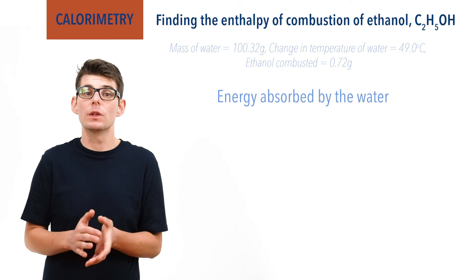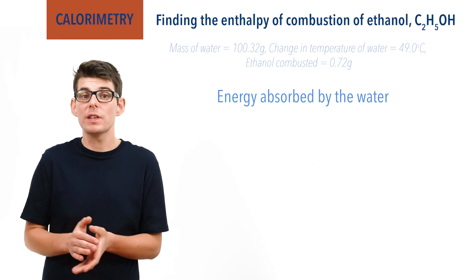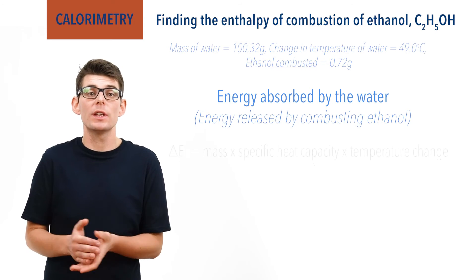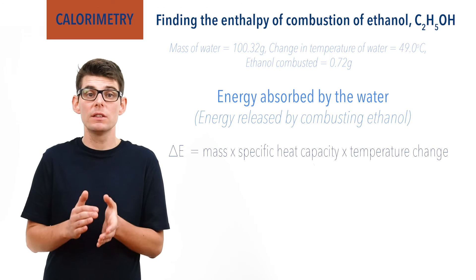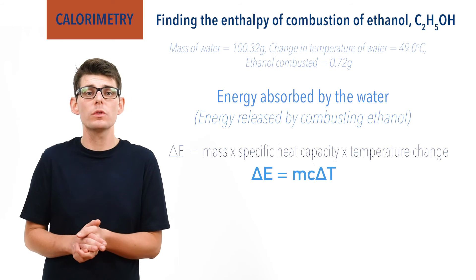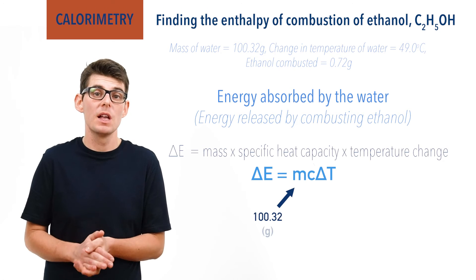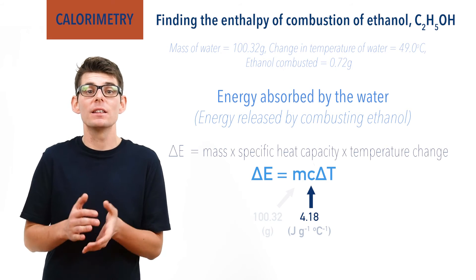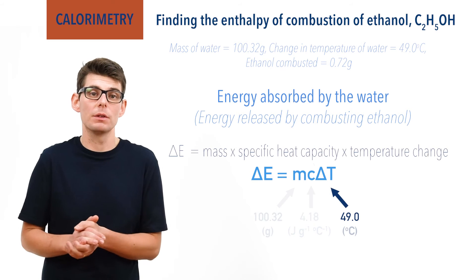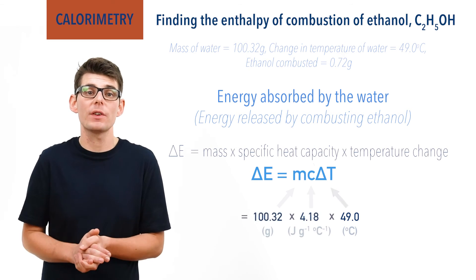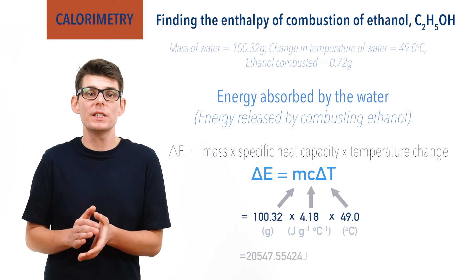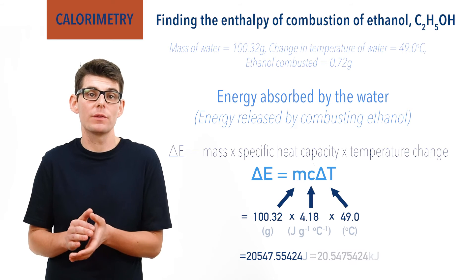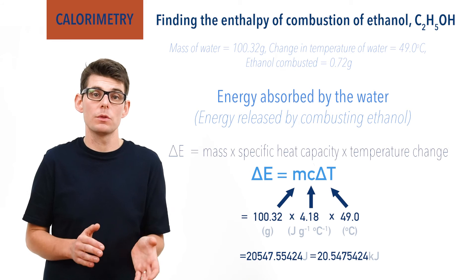First, we need to find the energy that the water in the calorimeter absorbed — this will tell us how much energy the combusting ethanol released. Remember: change in energy equals mass times specific heat capacity times temperature change. The mass of the water being heated was 100.32 grams, the specific heat capacity of water is 4.18 joules per gram per degree Celsius, and the temperature change was 49 degrees Celsius. Multiplying these together, the energy absorbed by the water was 20,547.5 joules, or 20.5475 kilojoules, as one kilojoule equals a thousand joules.